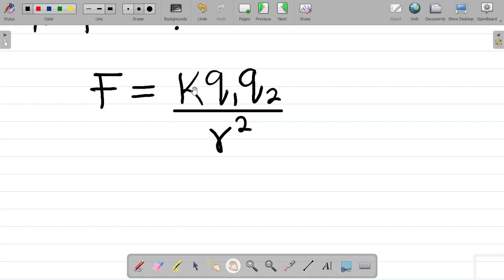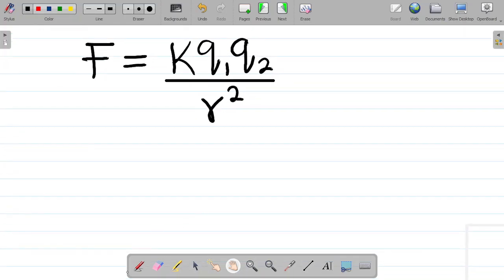So if you can look at this, K is a constant. And whether you're given or not, the value of K is equal to 9 times 10 to the power of 9. This is the numerical value of K.